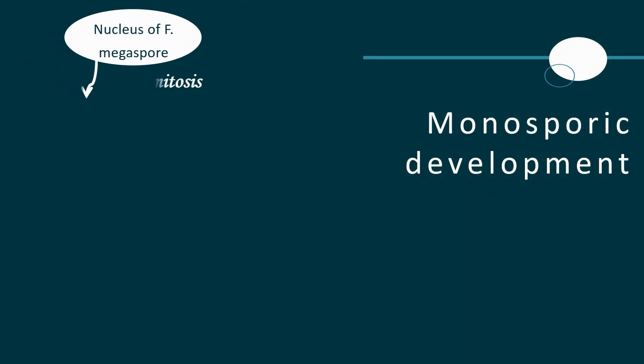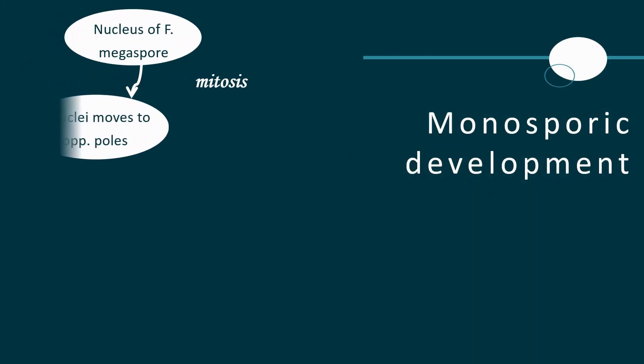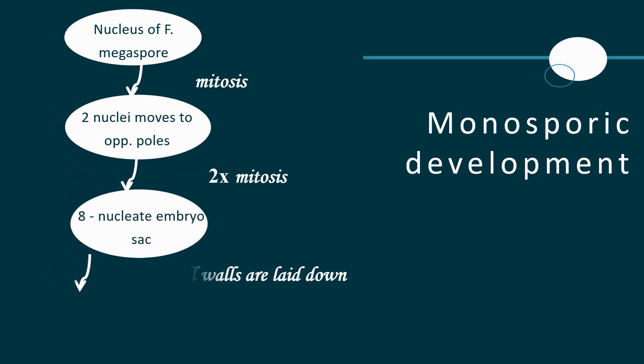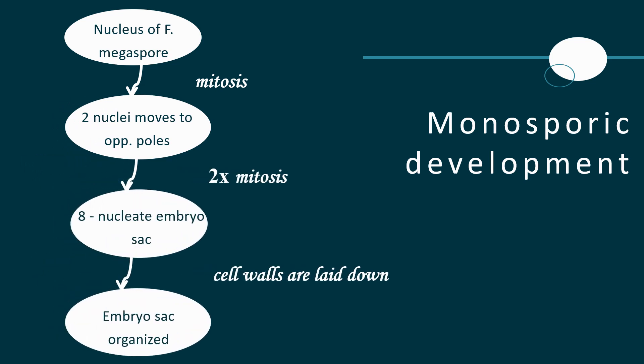Monosporic development begins with the nucleus of the functional megaspore undergoing mitosis to produce two nuclei, which move to opposite poles. At this stage the embryo sac is known as the two-nucleate embryo sac. In order to produce an eight-nucleate embryo sac, two further mitotic divisions are required.